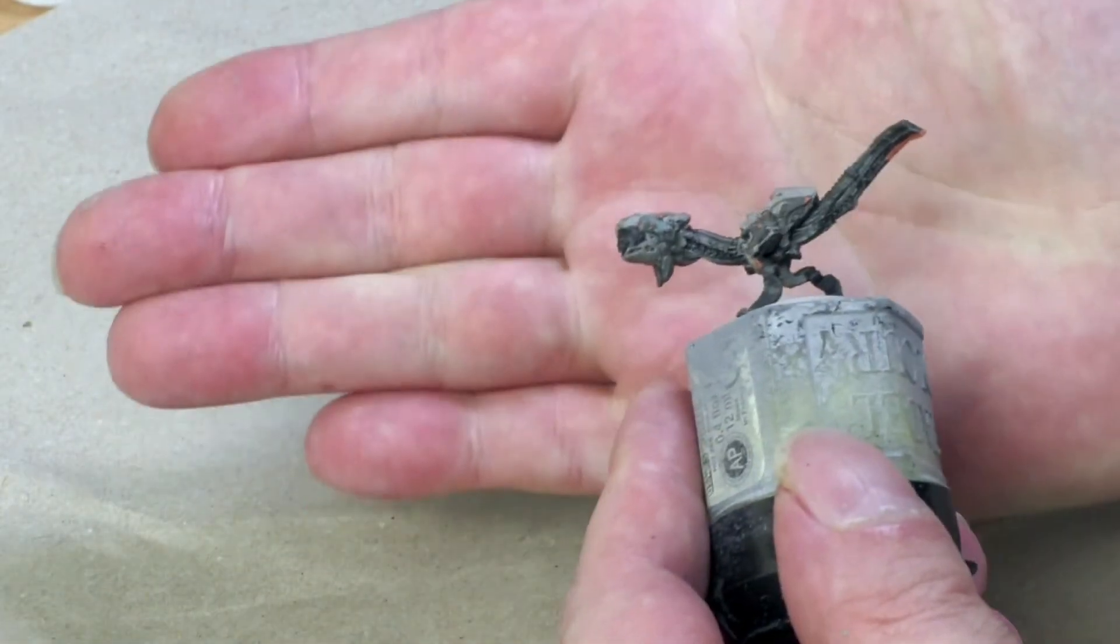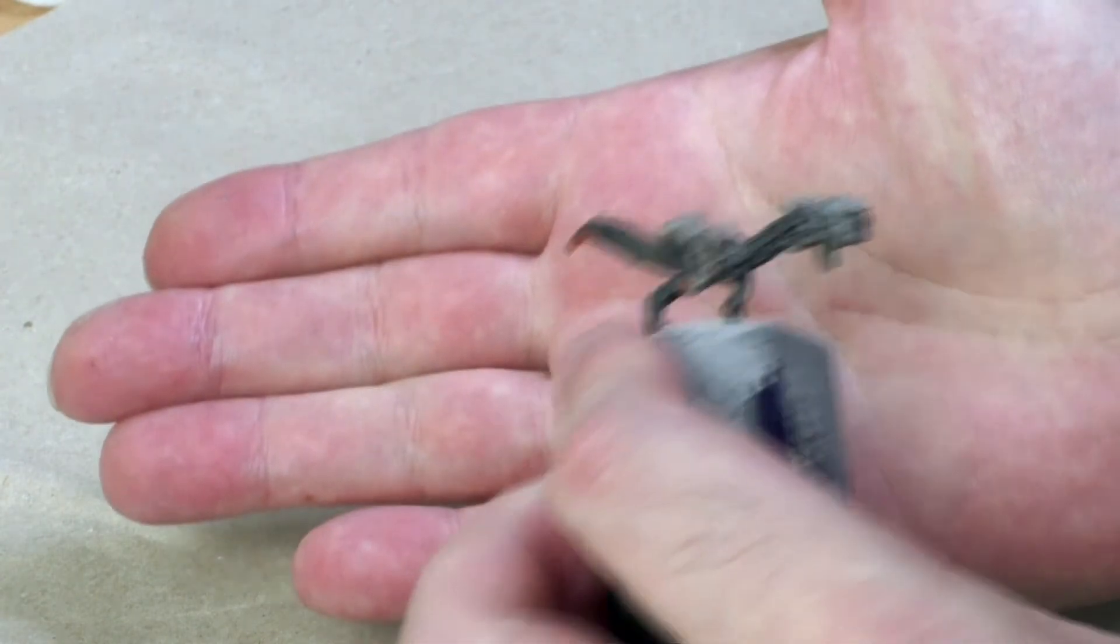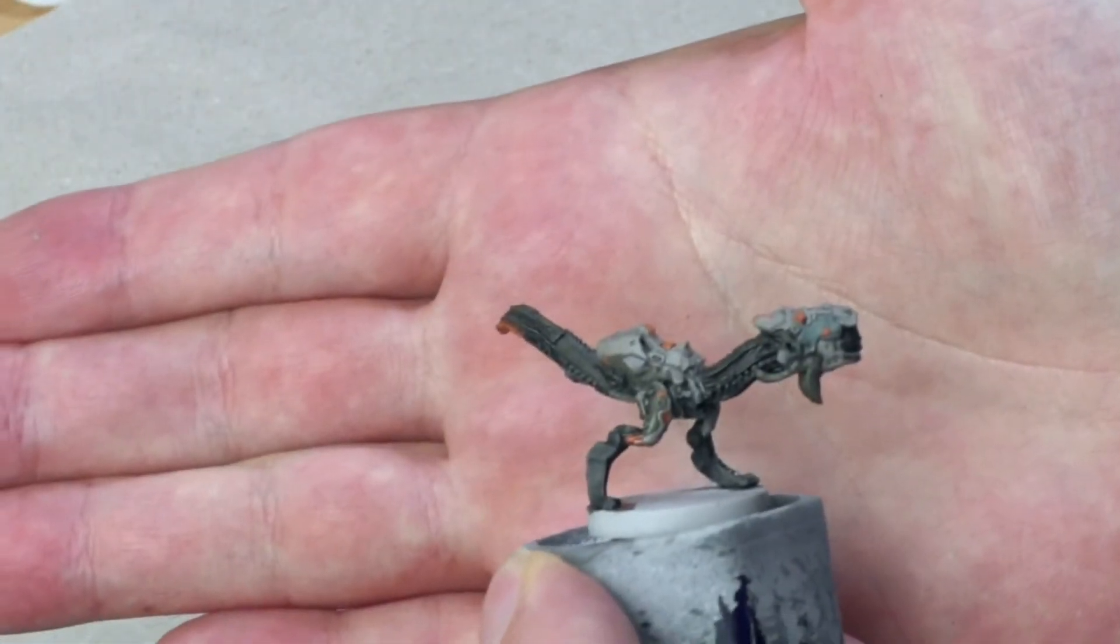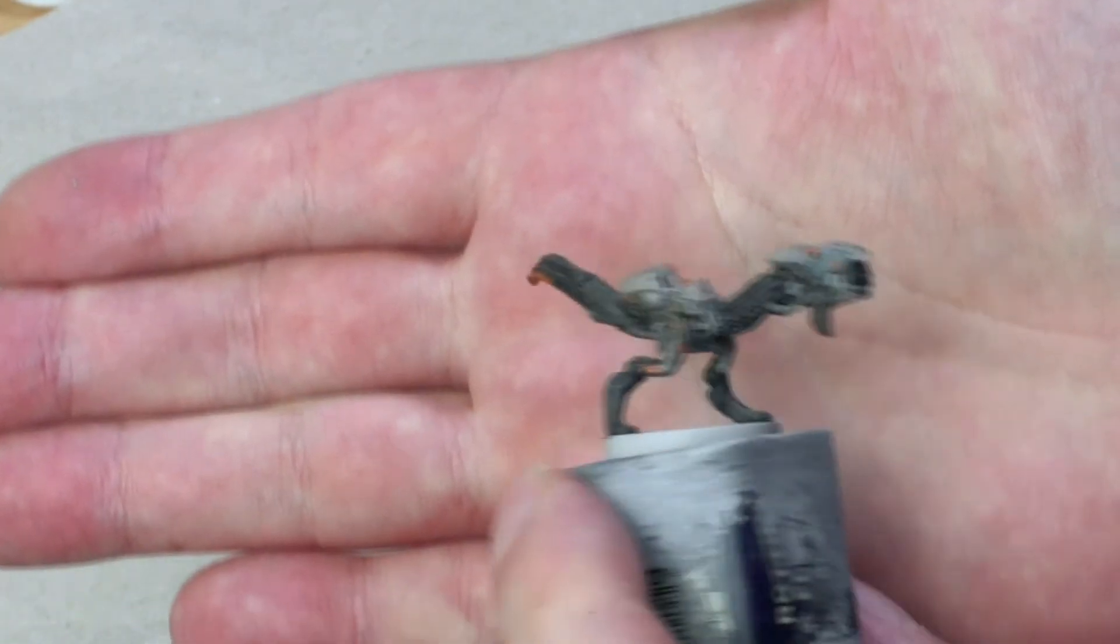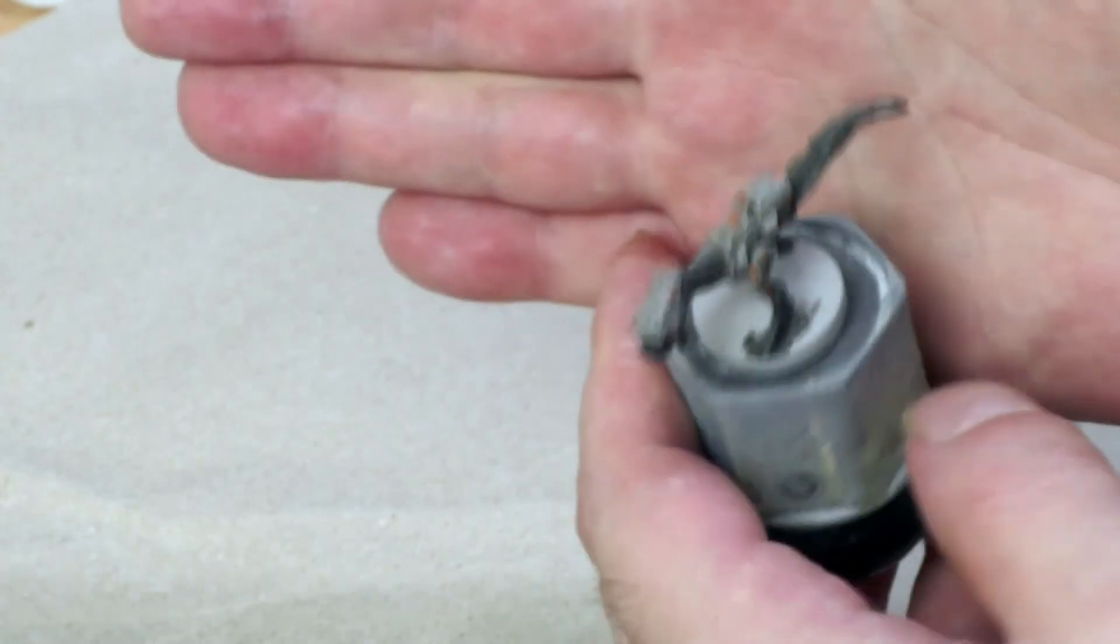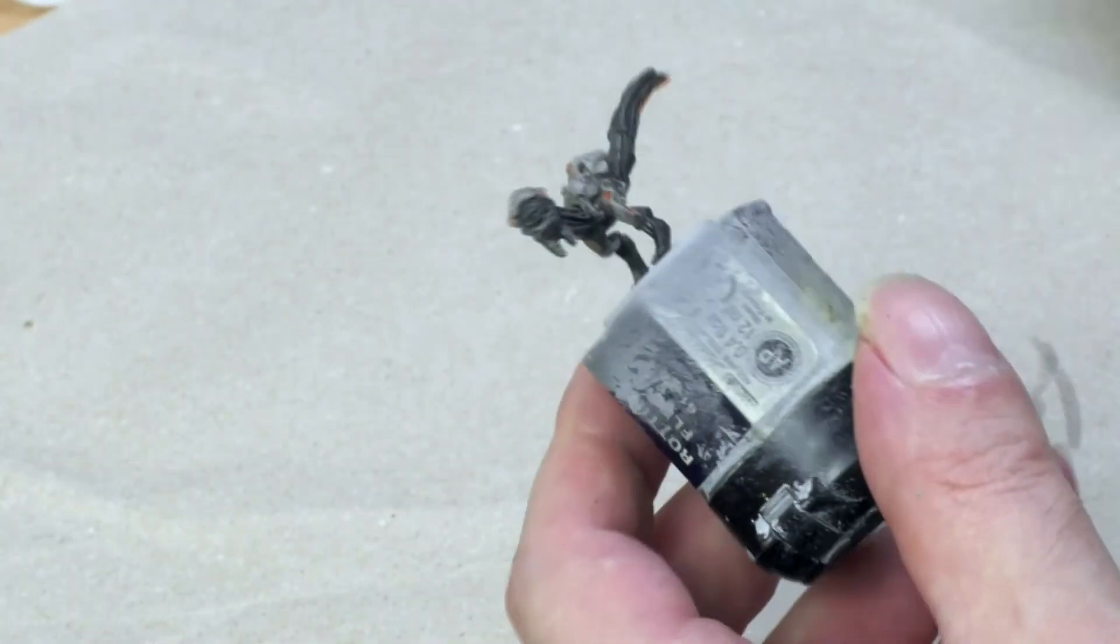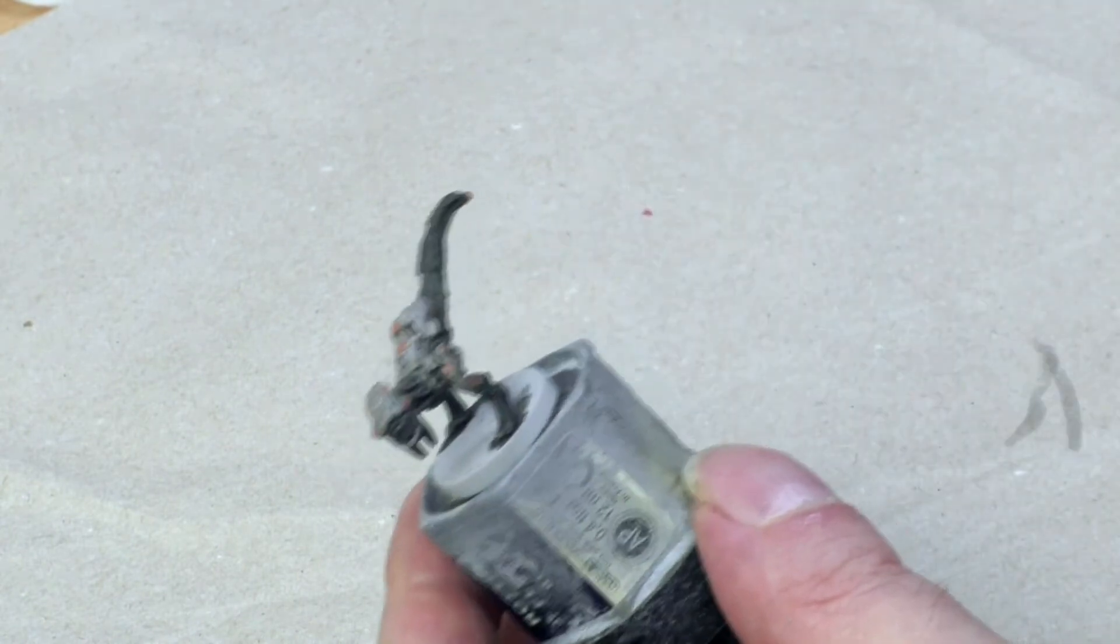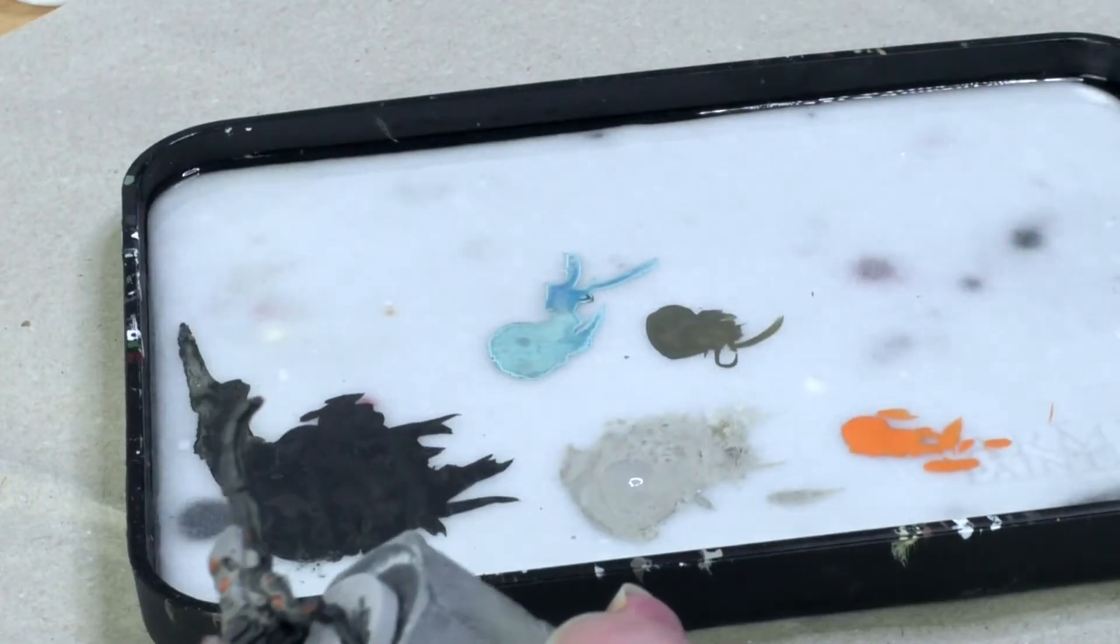Now the wash has dried and created some nice shadows that separate the different metal plates and pieces and therefore enhance the contrast. On the other side, the wash also darkened the metal plates so that we now should make them lighter again. In doing so, we enhance the contrast even more.